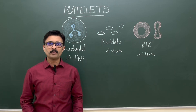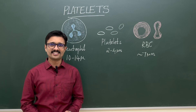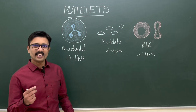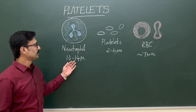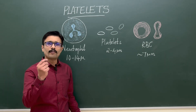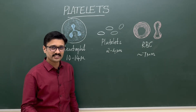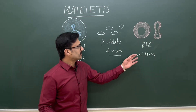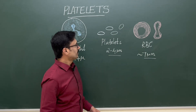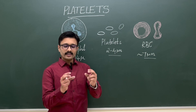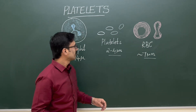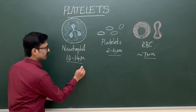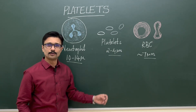Platelets are formed elements present in the blood along with red blood cells and white blood cells. They are the smallest among the blood cells. In this diagram you can compare the size of platelets with red blood cells and neutrophils. Platelets are small fragments derived from megakaryocytes, ranging between 2 to 4 micrometers in diameter, whereas red blood cells are around 7 micrometers and neutrophils are 10 to 14 micrometers.